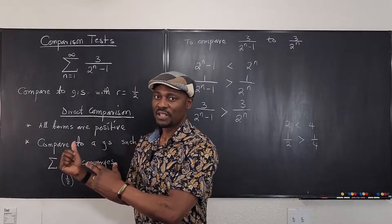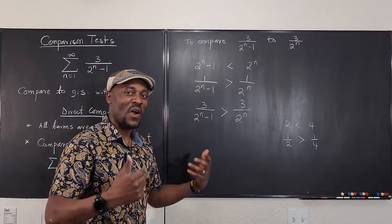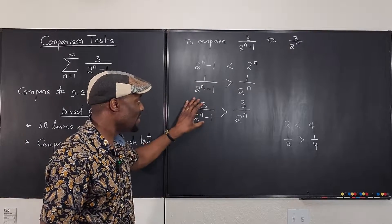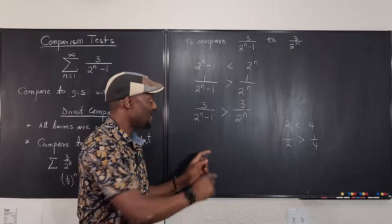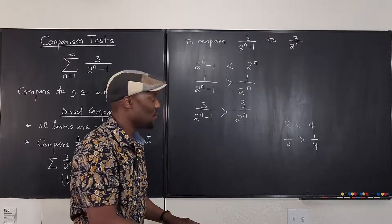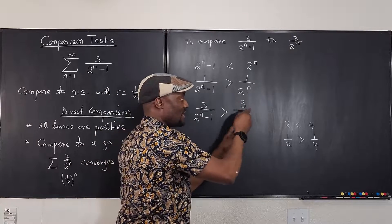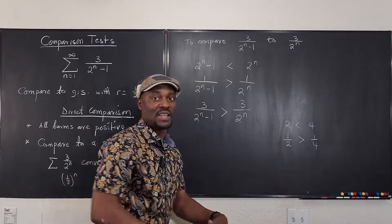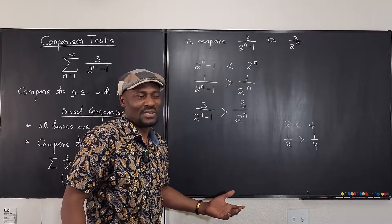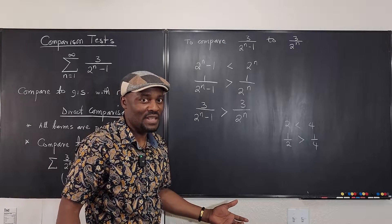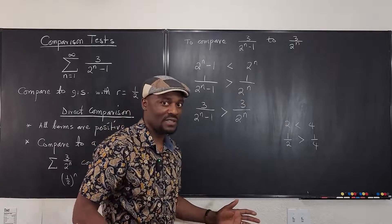Now look — can we use the direct comparison test in this case? No, because our desire was that our series would be less than 3 over 2^n. But we got the opposite: our series is greater. If the sign were the other way, we would simply say: therefore this series converges by the direct comparison test. Since it's not, the direct comparison test fails here — it's not that it's wrong, it's just useless in this case.